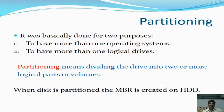After low-level formatting, the next step is partitioning. Partitioning is done for two purposes: first, to have more than one operating system, and second, to have more than one logical drive. Partitioning means dividing the drive into two or more logical parts or volumes. When the disk is partitioned, the MBR is created on the hard disk drive.